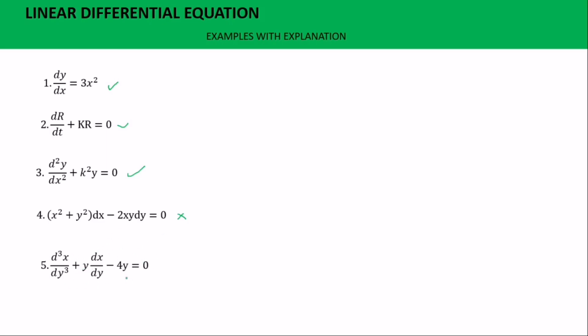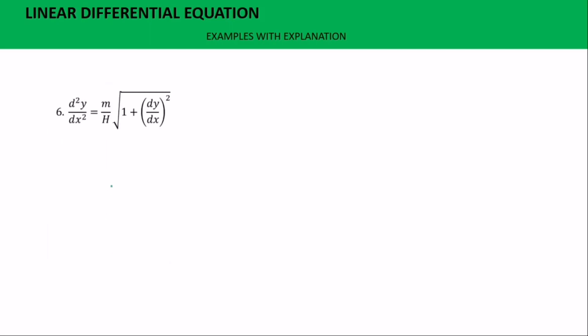For example five, you can pause the video and try. Note the trick here: the dependent variable is now x and the independent variable is y. So this equation is linear, because it is the independent variable which is multiplying the derivative. The degree should be one — the highest order here is two, and the exponent of that highest order is one, so this is a linear differential equation.